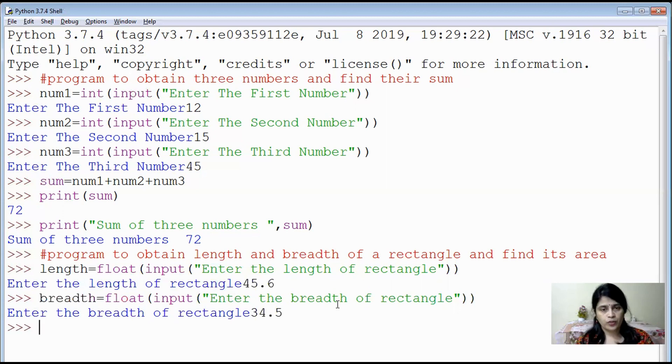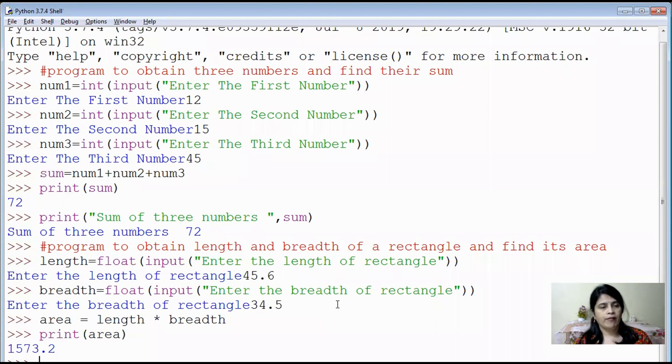Now inputs are over. We'll have to do the processing. How we need to do the processing? We can store that length into breadth in a variable area, because the formula of finding out the area of rectangle is length into breadth. So now it is stored, but we'll have to display the value. We can write print area. It will display the value, that is 1573.2. Hope you have understood how to construct a very simple program.